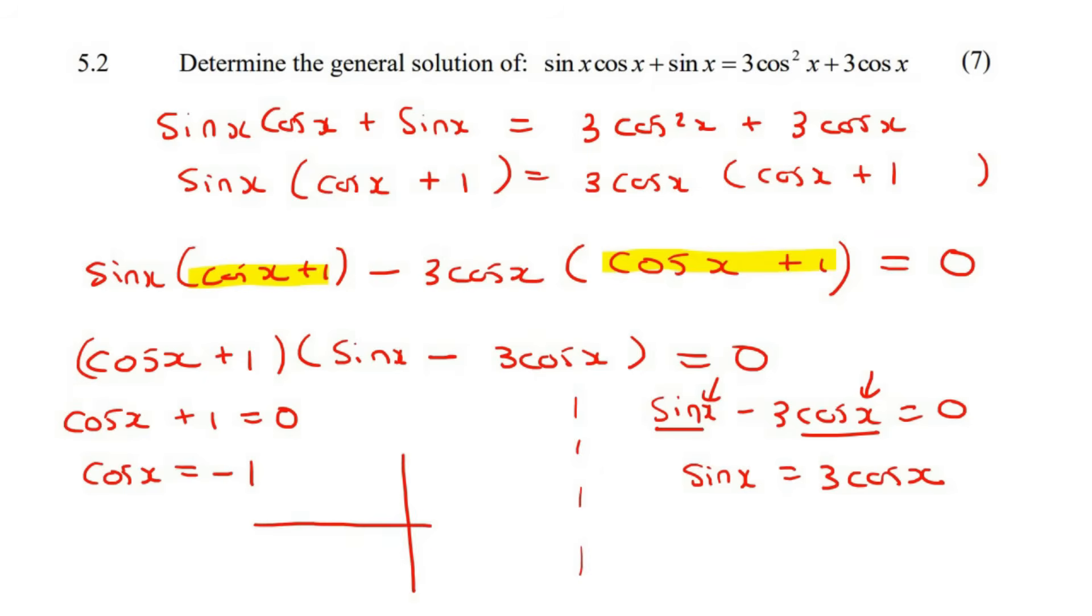So this is a cos graph which always starts up here at one and then it does this. Where is a cos graph equal to negative one? Well that would be over here. Now if you know your cos graph, you would know that this is 90 degrees and this is 180, and then this is 270 and that's 360, so this would be 180.